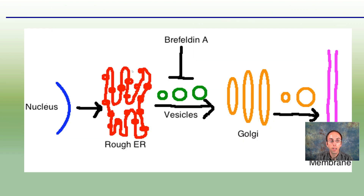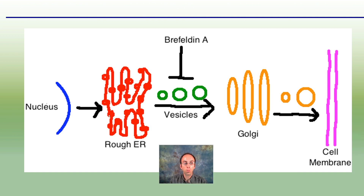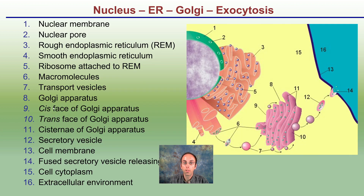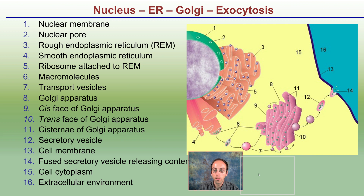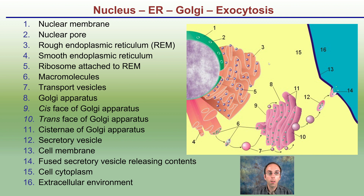Let's look into a little more detail. Here's the nucleus, our rough ER forming vesicles going to our Golgi and then to the cell membrane — a simplified version of the previous image. In a more complex labeled diagram, we have our nuclear membrane and our pores, which are regulated.